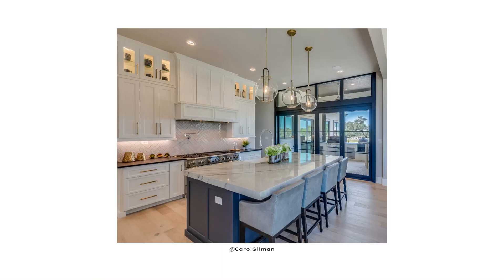The opposite of decorative lighting would be under-cabinet lighting — we don't see the light bulbs or the fixture itself; all we want is the light it provides. With decorative lighting, we want to see the light fixture because it's part of the design and reflects how we want the room to look and feel, as well as providing functional lighting.